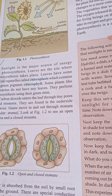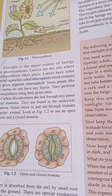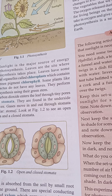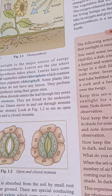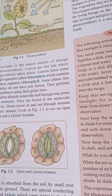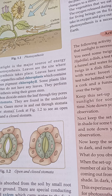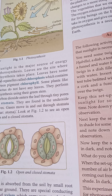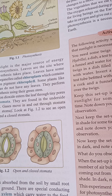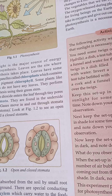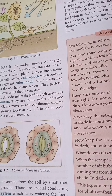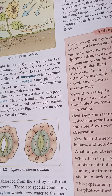In some plants like cactus, you will see that there are no typical leaves; instead the stem is green in color and performs photosynthesis. This is because the stem contains chlorophyll and carries out the process of photosynthesis.